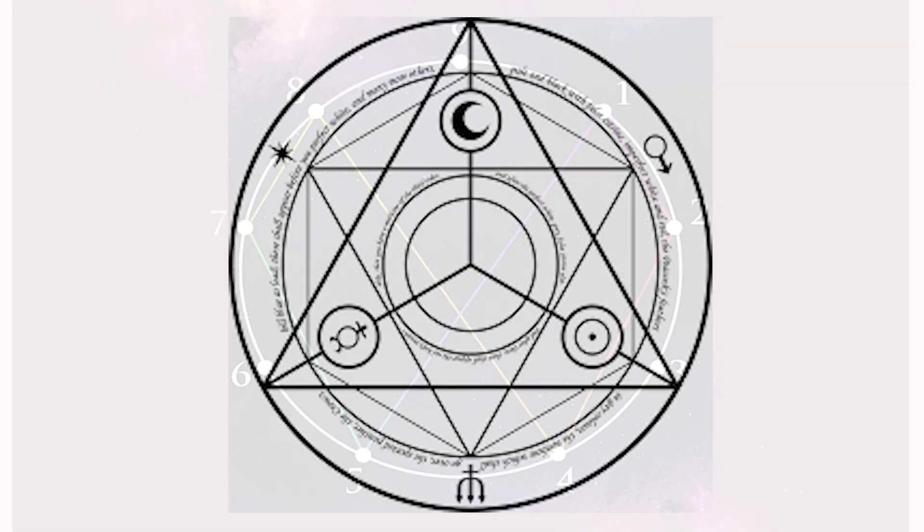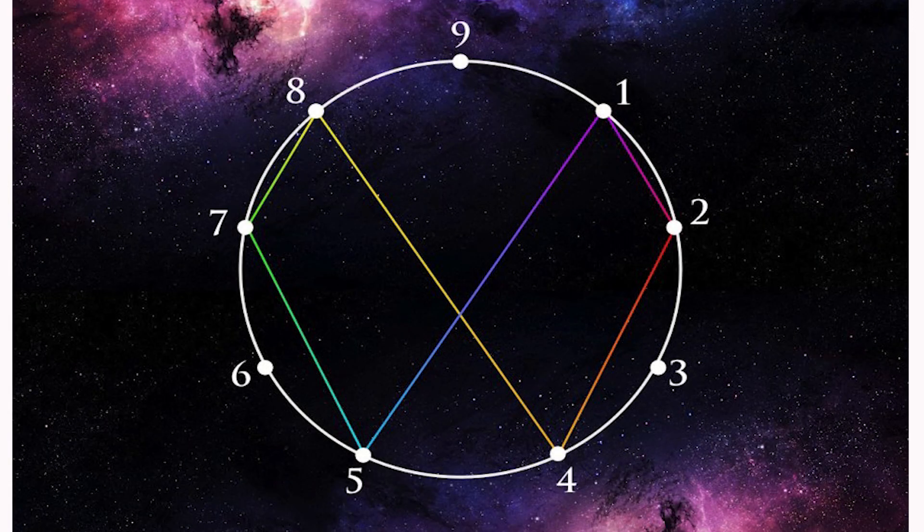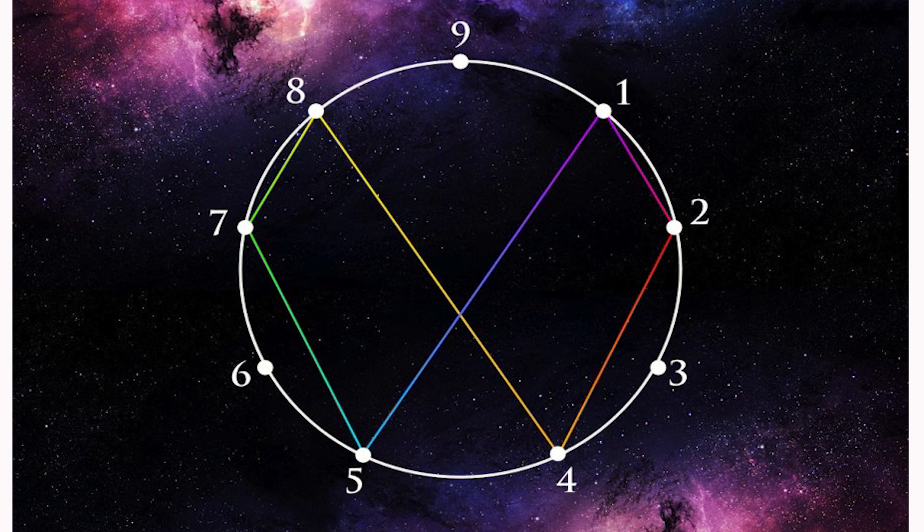If you write the numbers 1 to 9 in the clockwise direction, 3 governs 1, 2, 4, while 6 governs 8, 7, and 5. But even those two sides, 3 and 6, are governed by 9, which shows something spectacular.